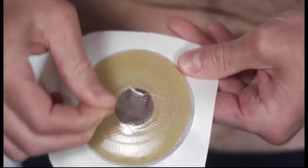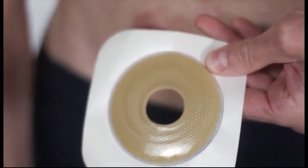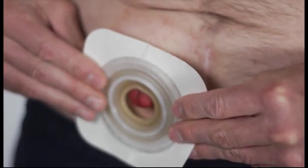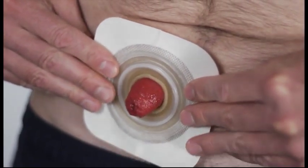To apply the wafer to your skin, remove the clear or opaque plastic release liner from the back of the wafer by pulling the blue tab or the edge of the release shield and immediately center the opening over your stoma.